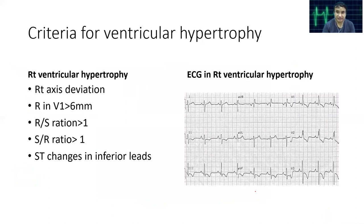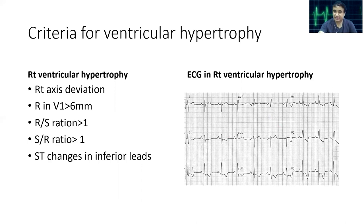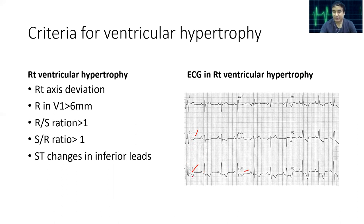When looking at the ECG of right ventricular hypertrophy, there is more positive deflection in the electrodes that see the right ventricle. We look at these changes especially in Lead 2 and Lead 3, the inferior leads, because the inferior surface of the heart is formed by the right ventricle. In the inferior leads — Lead 2, Lead 3, and AVF — we can see T wave inversion and ST depression, suggesting some form of RV strain.